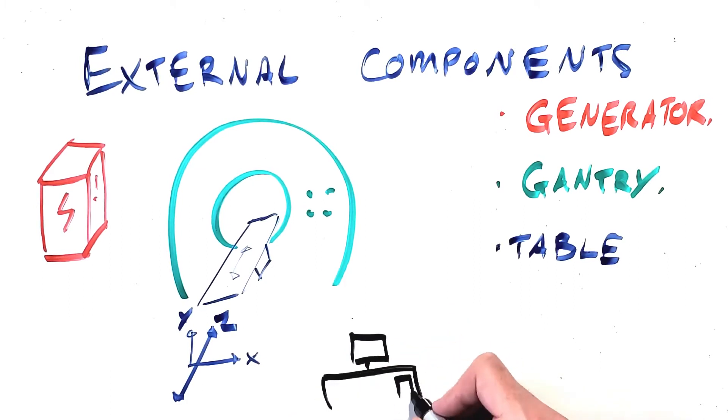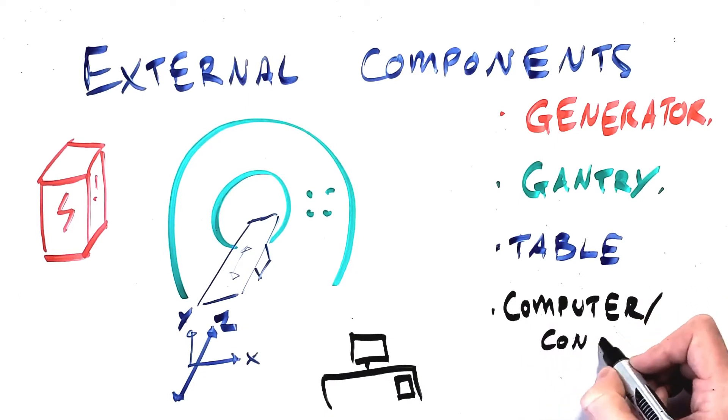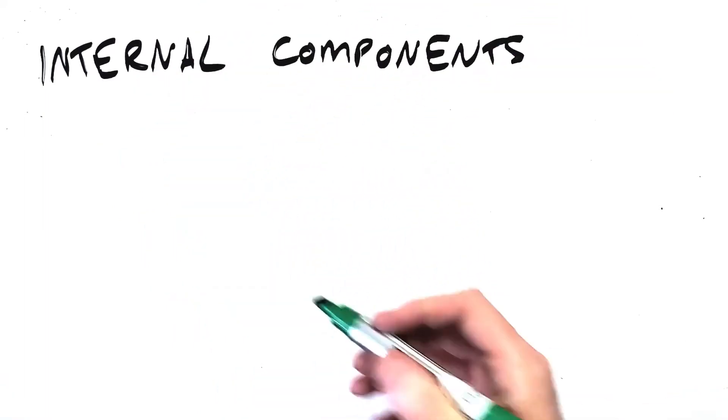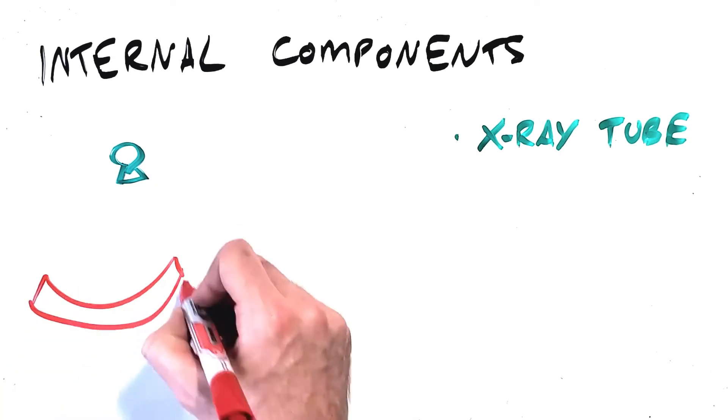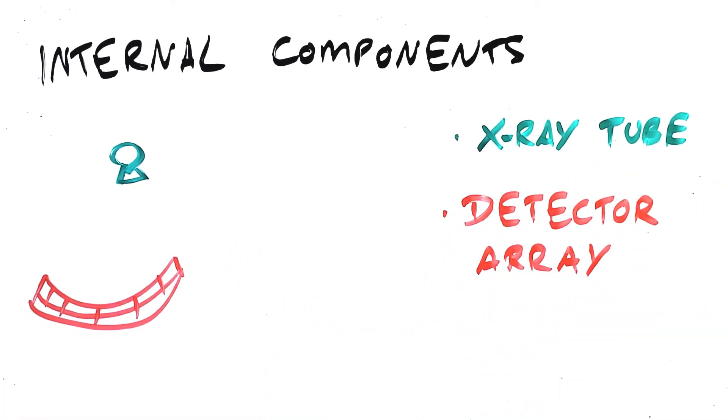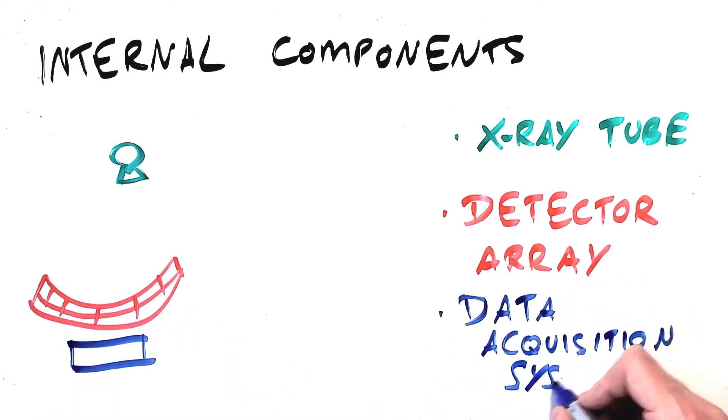And the computer and console from which the technologist acquires the scan which is in the control booth outside of the scan room. On the inside of the scanner is the x-ray tube which generates x-rays, the detector array which detects the x-rays transmitted through the patient, and the data acquisition system which receives data from the detectors and communicates that data to the scan computer.